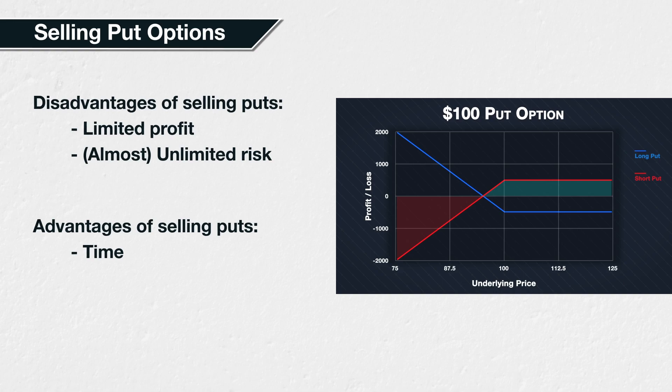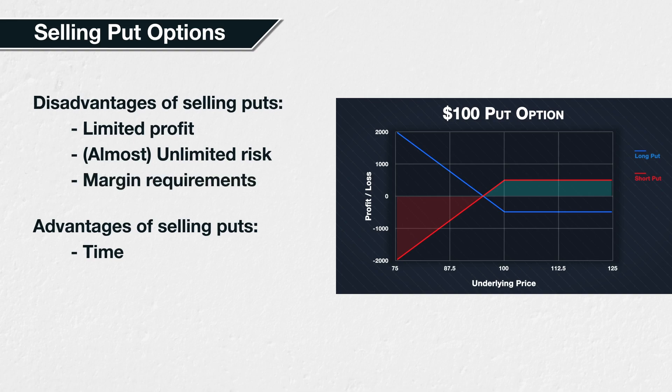When buying a put option, this will normally require the buyer to pay the entire premium upfront to open the position. As the maximum the long put option can lose is the premium paid, this is the only capital the buyer needs to use. In contrast, the maximum loss for selling a put option is the strike price minus the premium collected — a figure that will be considerably larger. The seller may not be required to hold enough in their trading account to cover their maximum loss, but they will be asked to keep a certain amount in their trading account to support the position. This amount is called margin.